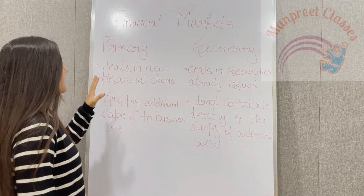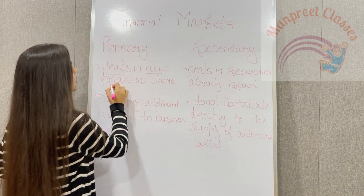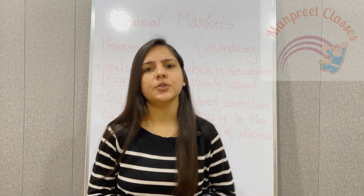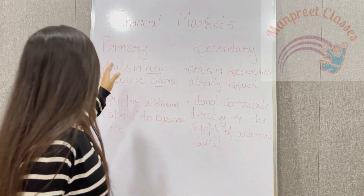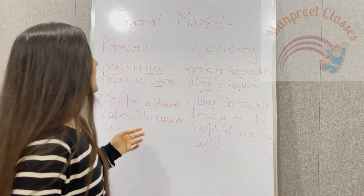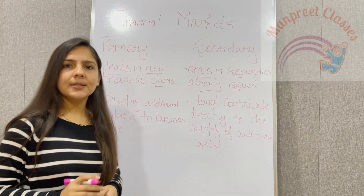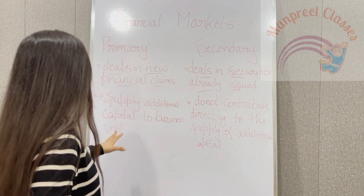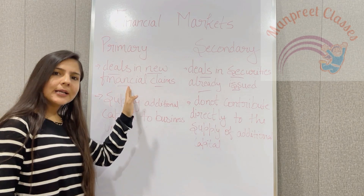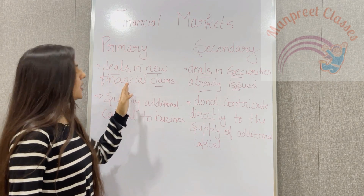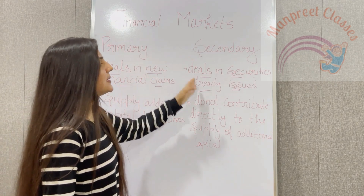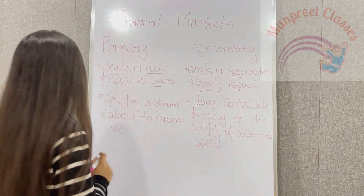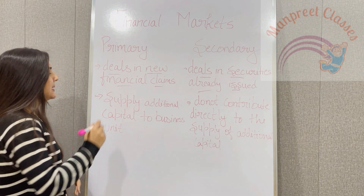Primary market deals in the issue of new financial claims — that is, securities or claims which are issued for the first time come under the primary market. On the other hand, secondary market deals in securities that are already issued in the market. So the major difference is: primary market deals with new securities or new financial claims, and secondary market deals with securities already issued.